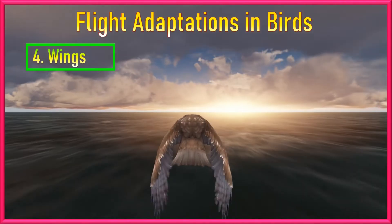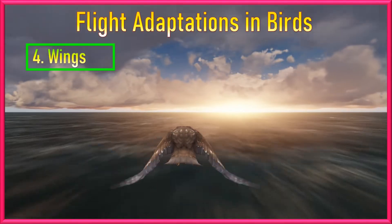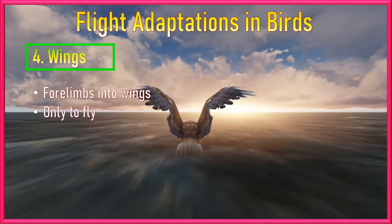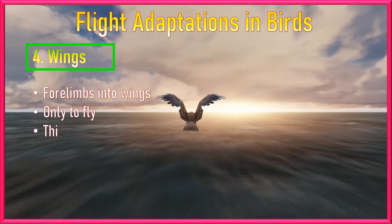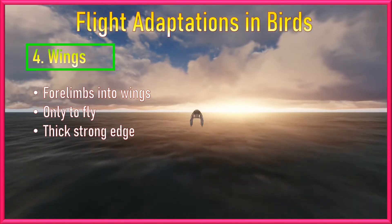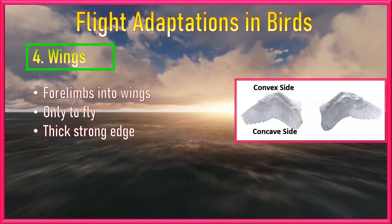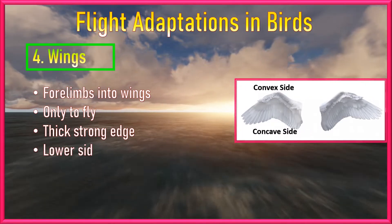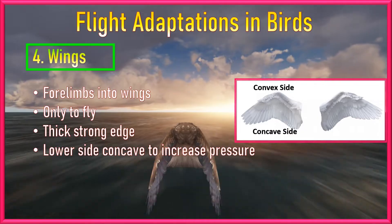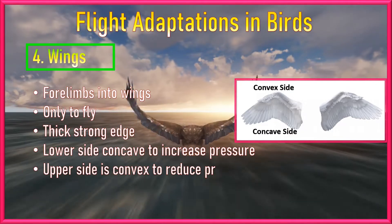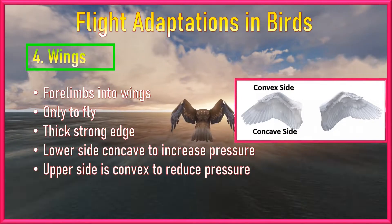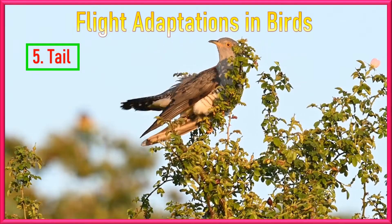Number 4: Forelimbs Modified into Wings. Forelimbs are modified into wings, whose only function is to fly. The wings have a thick strong leading edge, a concave lower surface, and a convex upper side. This helps in increasing the air pressure below and reducing the air pressure above. Thus, the bird can fly upward and forward.